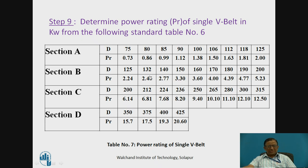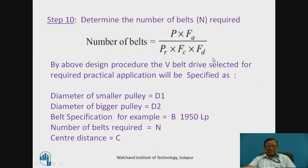The next step is to obtain the power rating of a single V-belt from manufacturer's data, available for different cross sections. For example, a B-section belt with a minimum diameter pulley of 200 mm has a power rating of 5.23 kW for a single belt. Using this, the number of belts N is calculated as total design power divided by the power rating of one belt multiplied by the correction factors for pitch length and arc of contact.